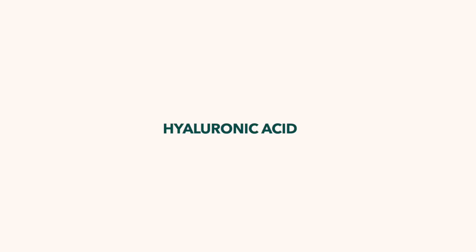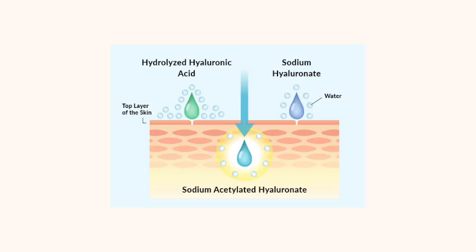Last category: hyaluronic acid — and another debunk: hyaluronic acid is actually not the most moisturizing humectant out there. Glycerin is actually more moisturizing, so don't believe the hype entirely. There are three forms of hyaluronic acid: hydrolyzed hyaluronic acid, which sits at the top layer of the skin; sodium hyaluronate, which has smaller molecules and goes deeper into the top layer; and acetylated hyaluronic acid, which penetrates the deepest but isn't used in many formulations because it can be irritating.